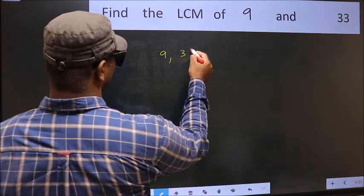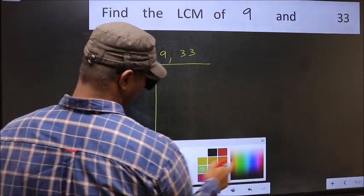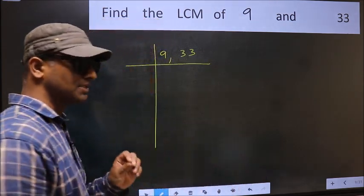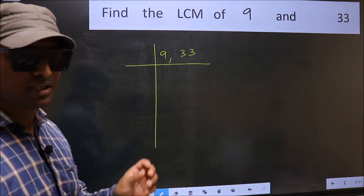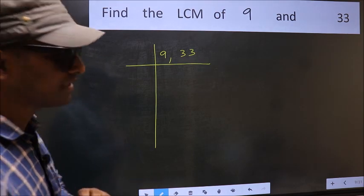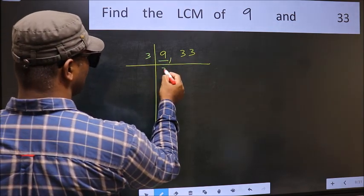9, 33. This is your step 1. Now you should focus on the first number which is 9 here. Now 9 is 3, 3 is 9.